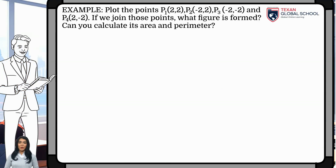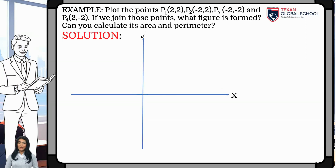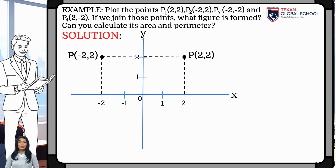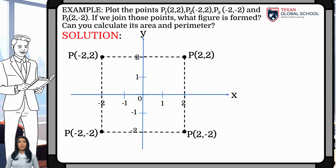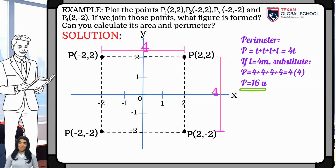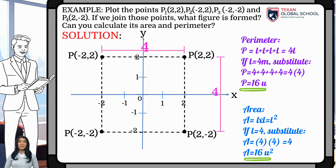In this last example, we will plot the given points to define the shape that is formed, and then calculate the perimeter and area. The point (2, 2) is in quadrant 1, the point (-2, 2) is in quadrant 2, the point (-2, -2) is in quadrant 3, and the point (2, -2) is in quadrant 4. We can see that a square is formed. The distances from the axes to each point are 2 units; therefore, the side of the square is 4. The perimeter is calculated by adding its four sides, giving a perimeter of 16 units. The area is calculated by multiplying side by side, giving an area of 16 square units.